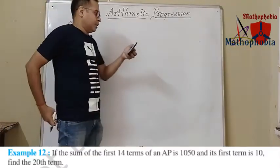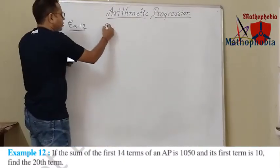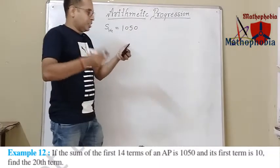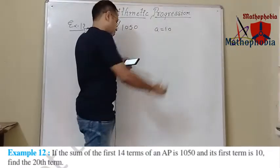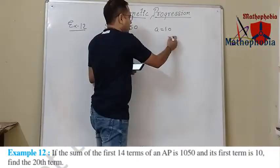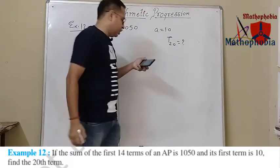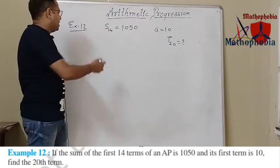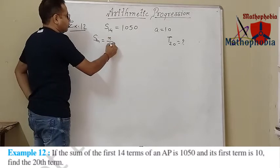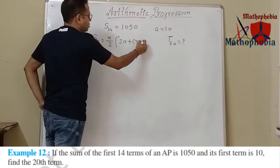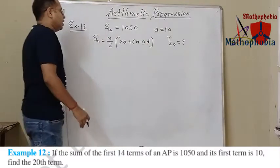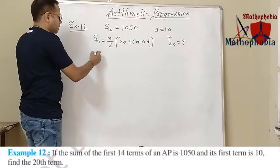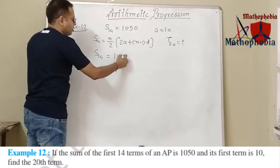If the sum of first 14 terms is 1050 and the first term is 10, find its 20th term. We need to find out t20. The sum of n terms is given by Sn equals n upon 2 times 2a plus n minus 1 into d. The value of n here is 14. So S14 equals 1050. We apply the formula: 14 upon 2 times 2a plus 14 minus 1 into d equals 1050.